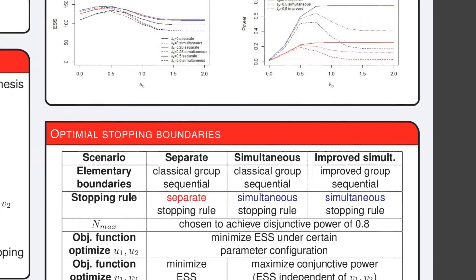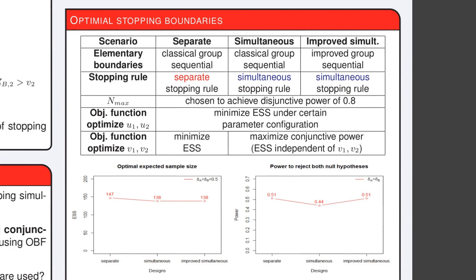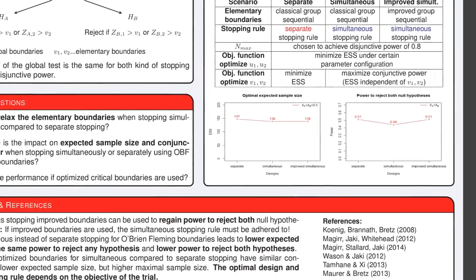In the next step, we derive optimized stopping boundaries under simultaneous and separate stopping for trials with a fixed disjunctive power of 80%. The objective is to minimize expected sample size while maximizing the conjunctive power. The expected sample size under the optimal simultaneous stopping design is 7% lower than under the optimal separate stopping design. This comes at the cost of a loss in conjunctive power of 7 percentage points. However, if the improved boundaries are used, the conjunctive power is the same as in the optimized separate stopping design.